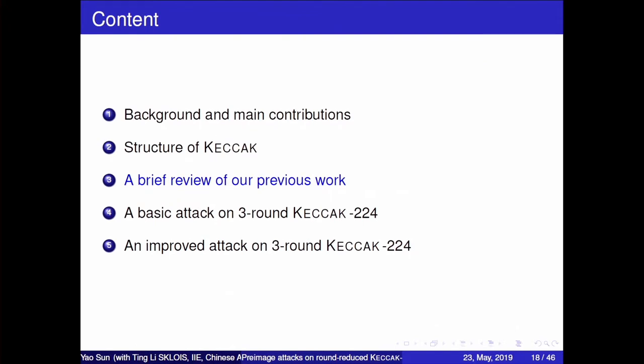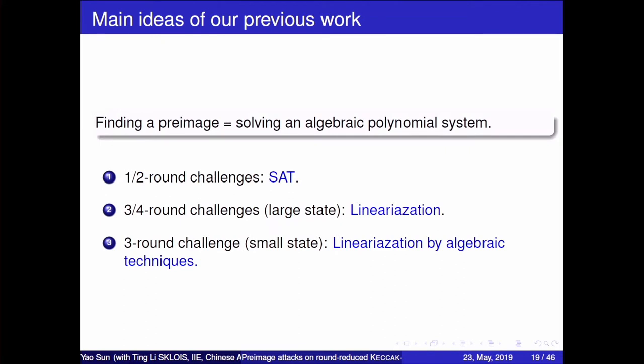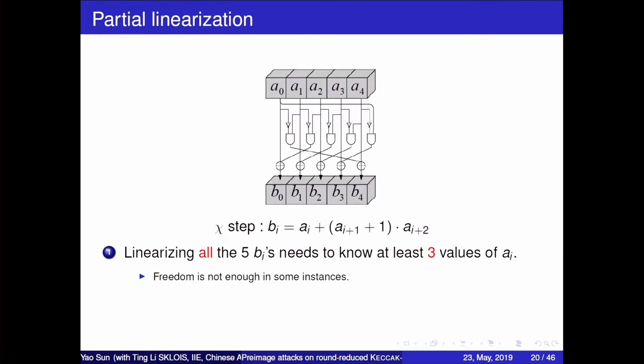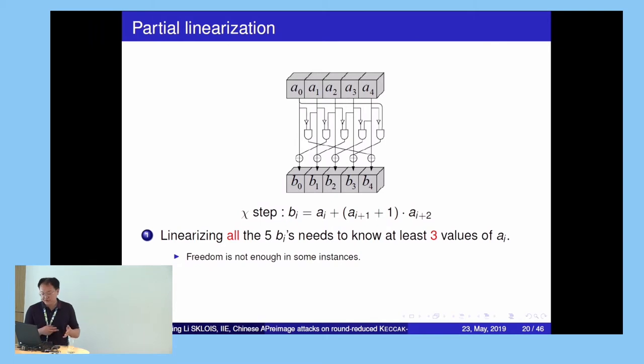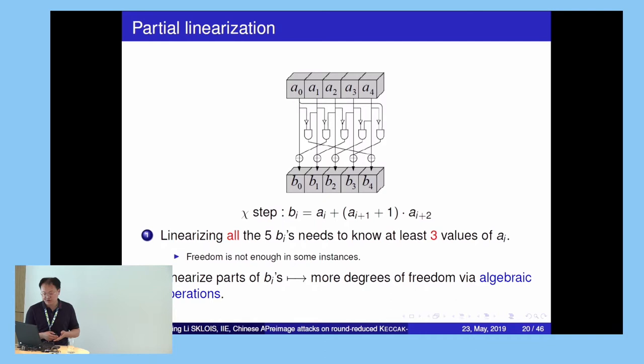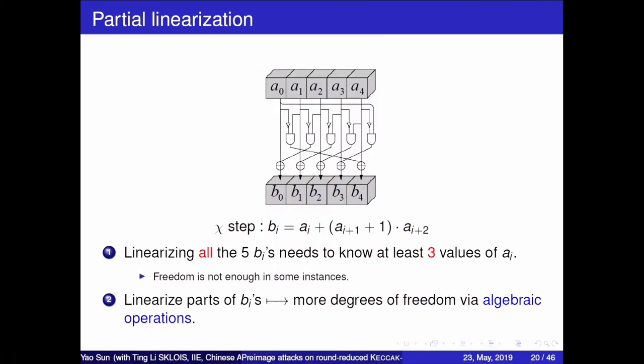Now a brief review of our previous work. Basically, the pre-image problem equals solving a polynomial system, which usually has multiple solutions. Challenges with lower rounds are solved by a SAT solver directly. Instances of higher rounds with larger states can be broken by linearization of the Keccak structure. But for the three-round challenge with small states, the previous linearization method does not work, so we also use some algebraic techniques. The key step is that we do not linearize all five output bits of the chi operation — instead, we linearize parts of the bits from the structure and handle the other bits using algebraic operations.